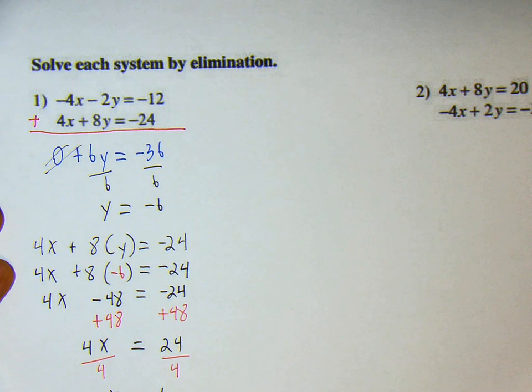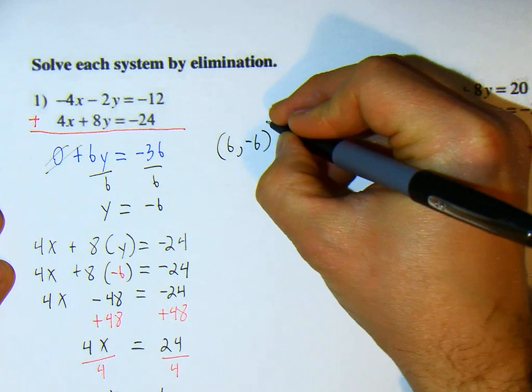And so now we have our solution set of 6, negative 6. These two should connect at 6, negative 6.